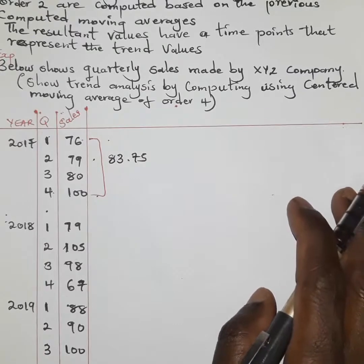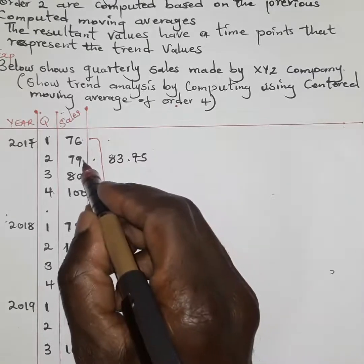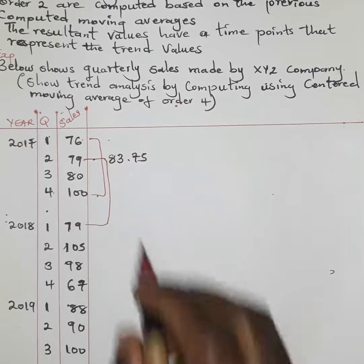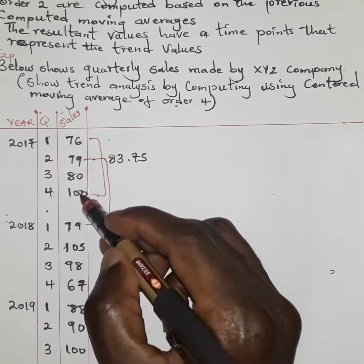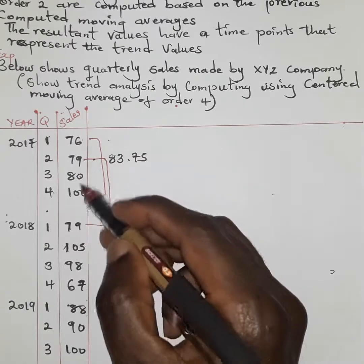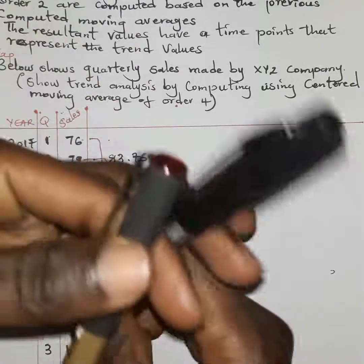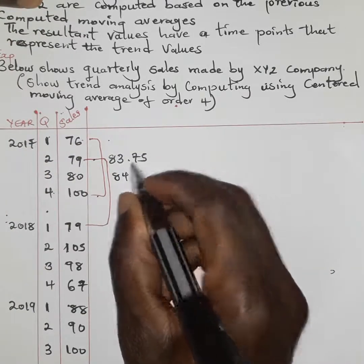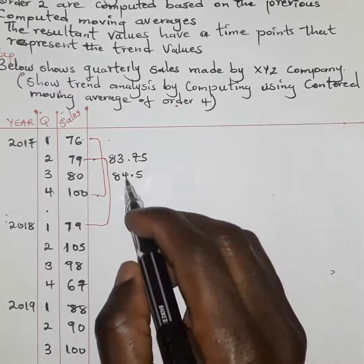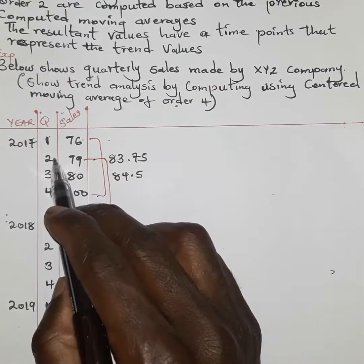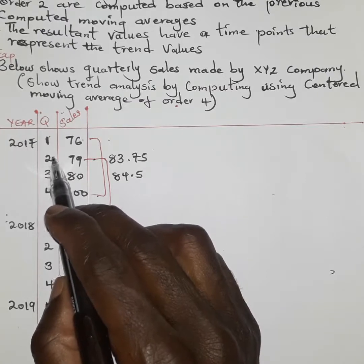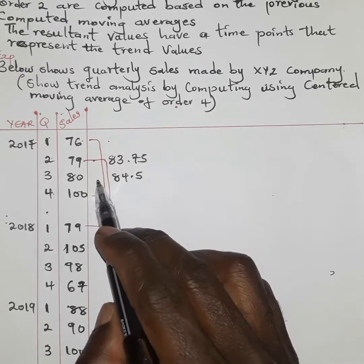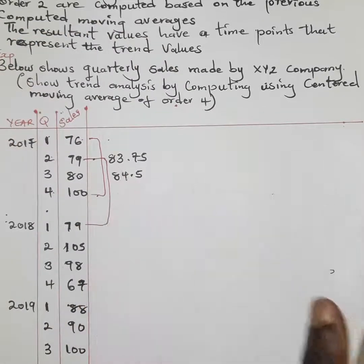We write 83.75 and then move to the next four pairs of quarters — from the second quarter onward. When we add those four values and divide by four, we get a value of 84.5. This represents the trend from quarter two, approximated after quarter three.